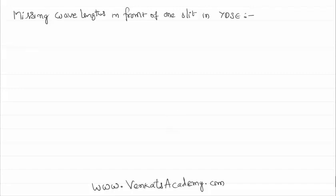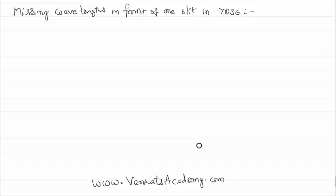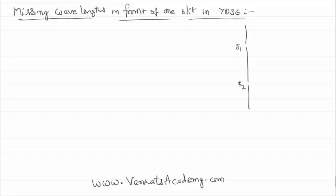Hello everybody, welcome to this video lesson. In this video lesson we are talking about missing wavelengths in front of one of the slits of Young's double slit experiment. We have arranged the system such that slit S1 and slit S2 are separated by distance small d. This is the screen where we get bright and dark spots. The point we are considering is exactly opposite to one of the slits, where the distance between the slits and the screen is capital D. What are the wavelengths missing in this case is what we want to calculate.